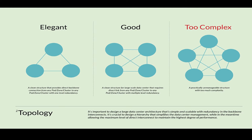The goal is to design an architecture that's simple and manageable. It is crucial to have a scalable hierarchy in a large data center with design redundancy for the backbone interconnects, while maintaining the maximum level of direct interconnect to achieve the highest degree of network performance. A simple topology is easier to manage — when a hierarchy becomes too flat, the complexity increases exponentially.